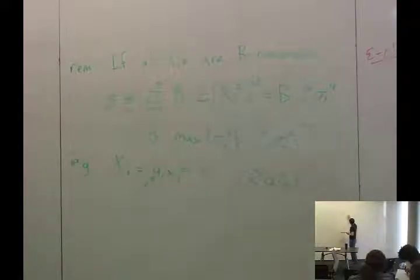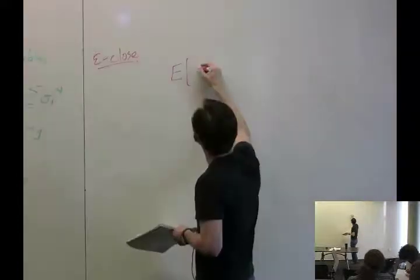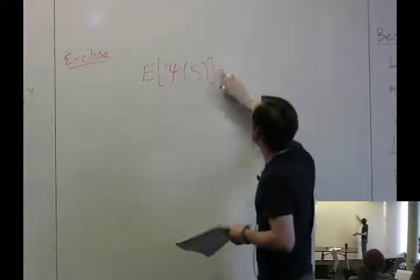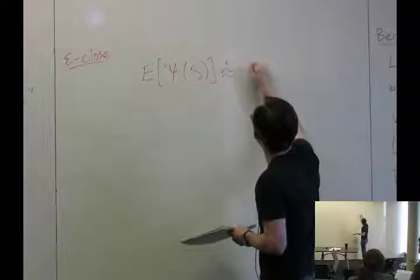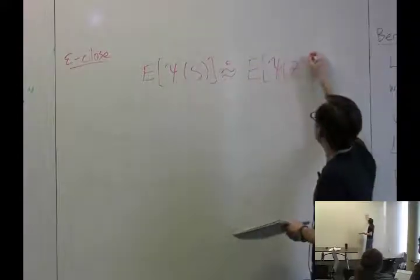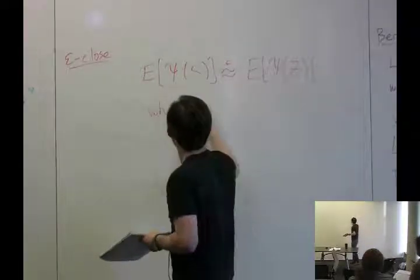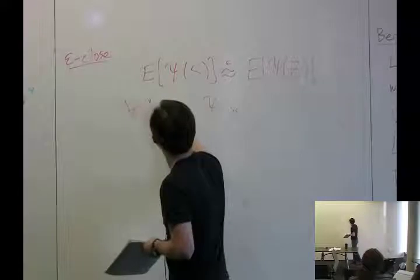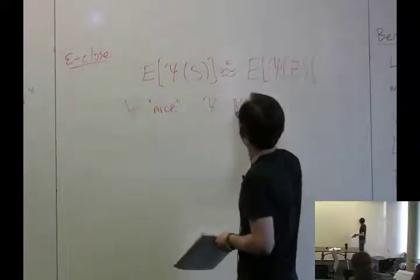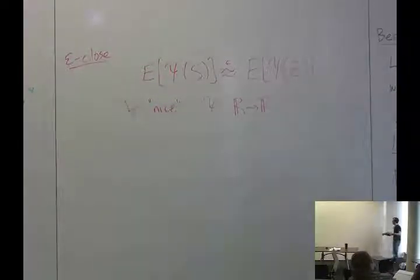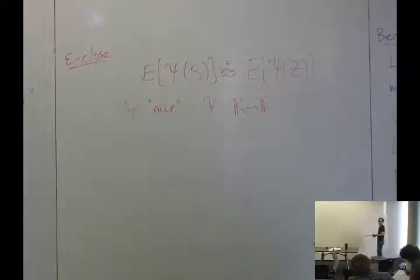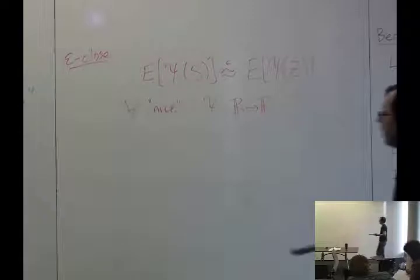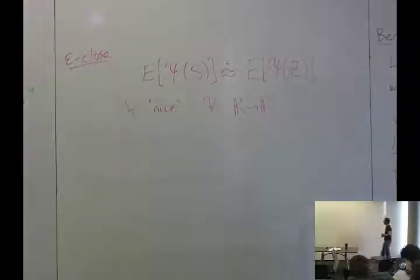A more general notion is: for some test function psi, the expected value of psi under S is approximately — up to epsilon — equal to the expected value of psi at Z, for all nice test functions psi mapping R to R. In statistics you might call this a test function; in cryptography you might call it a distinguisher. We say S and Z are close or indistinguishable if nice test functions cannot distinguish them.